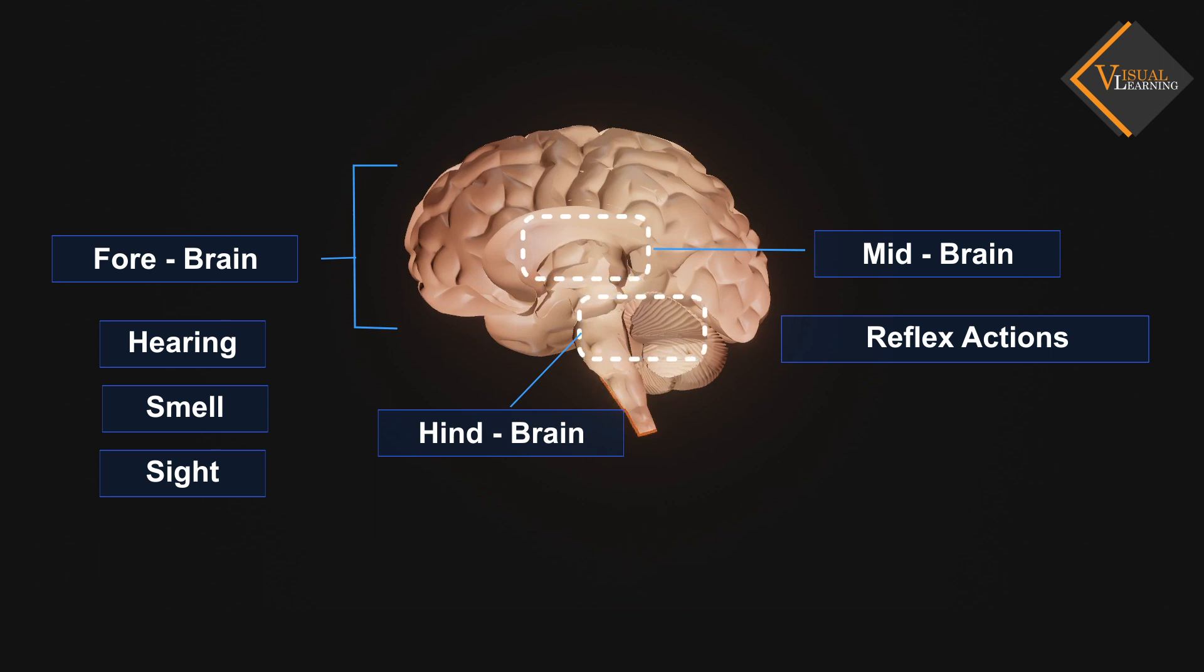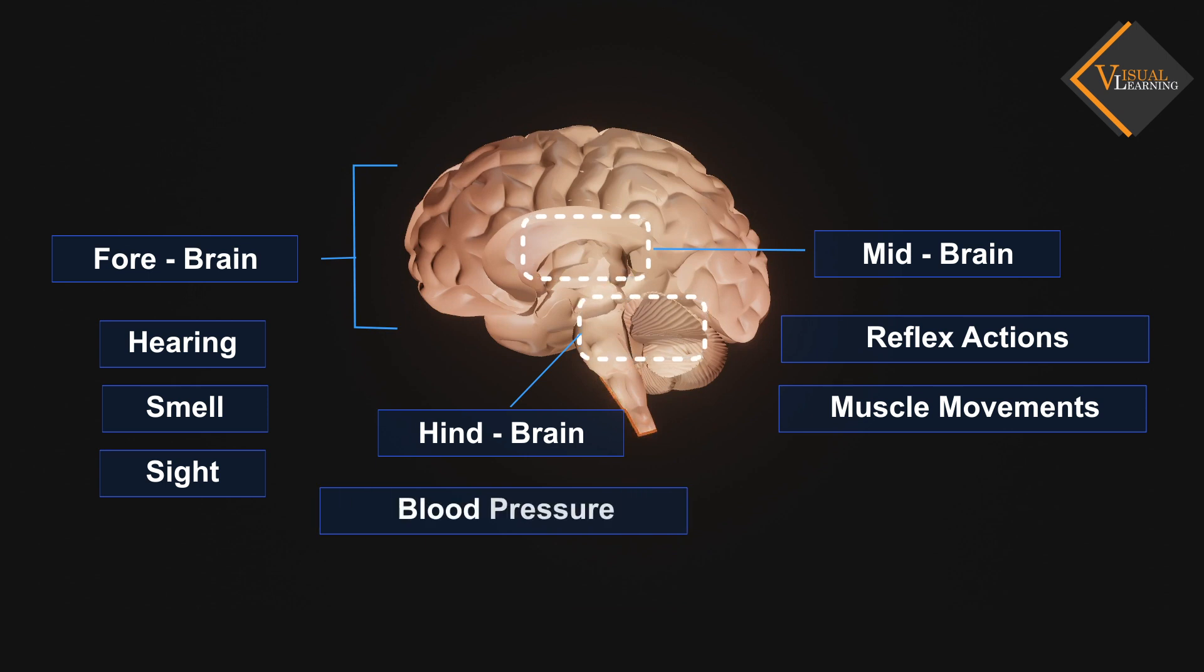There is another set of muscle movements over which we do not have any thinking control. Many of these involuntary actions are controlled by the midbrain and hindbrain. Blood pressure, salivation, and vomiting are controlled by the medulla in the hindbrain.